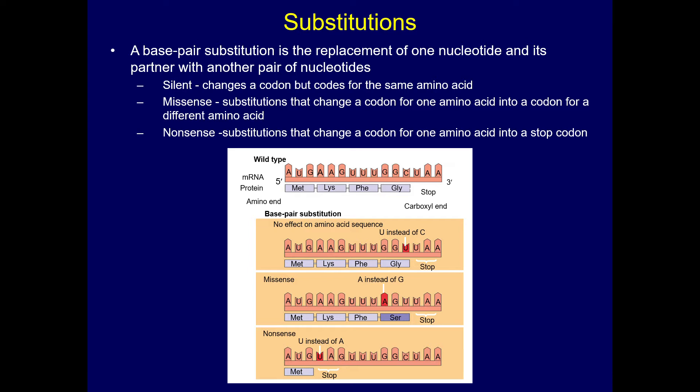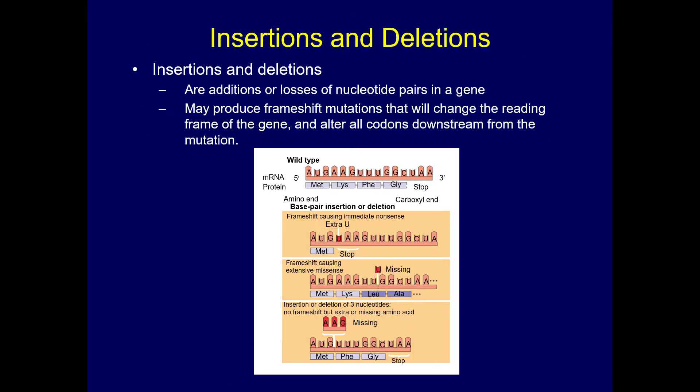There are some mistakes that can be made when creating RNA. Substitutions can occur where the wrong base is put in. Sometimes extra bases are added in, or a base is deleted, and that changes the message — resulting in different amino acids because a different base was inserted.